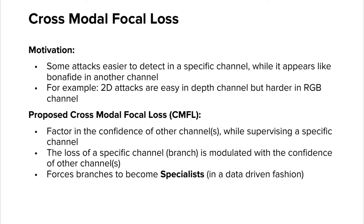Coming to the details of the loss function — the motivation is that some attacks are easier to detect in a specific channel, while appearing as bona fide in another channel. For example, 2D attacks are easy to detect in the depth channel as they are flat, but harder to detect using the RGB channel alone. Another example is attacks using facial tattoos: they can be easily identified in the RGB channel, but much harder to detect using the depth channel alone. Consider the loss contribution of the tattoo attack in the depth branch — forcing the network to differentiate between bona fide and tattoos in the depth branch can result in overfitting to unreliable nuisance factors, which might lead to confident misclassifications. So we need a way to reduce the loss contribution of these samples in a branch, conditional on the ability of other channels to classify it correctly.